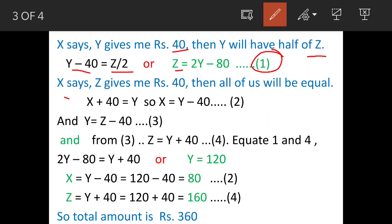Another statement: X says if Z gives me Rs. 40, then all three of us will be equal. One equation we can formulate is that Z has given 40 rupees to X, so X + 40 = Y. This is our equation 2, and here we can say X = Y - 40.